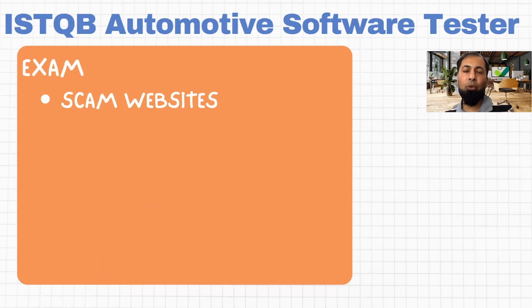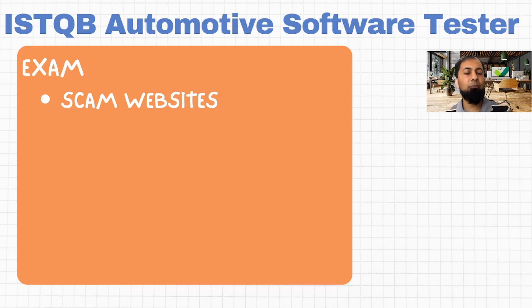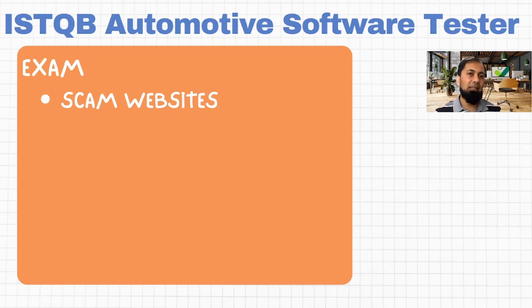Once you have gone through the whole content, the next step is to check how well you have learned and whether you are ready for the exam. To do this, you look for mock exams. There are a number of websites offering mock exams for ISTQB automotive software tester certification, but some of these are really scams. Some websites provide 5 to 10 sample questions and ask for payment to access the full version.